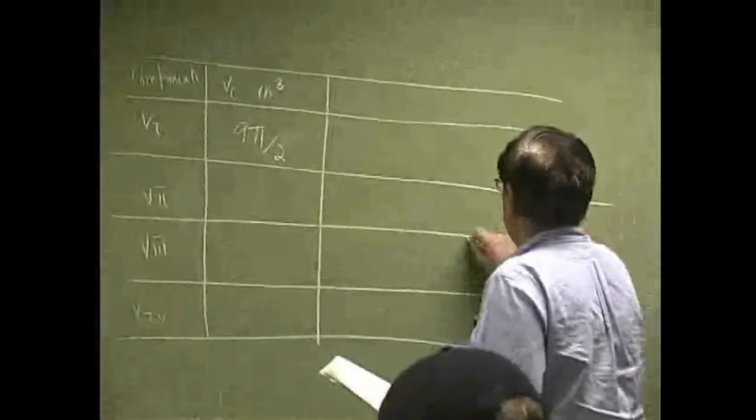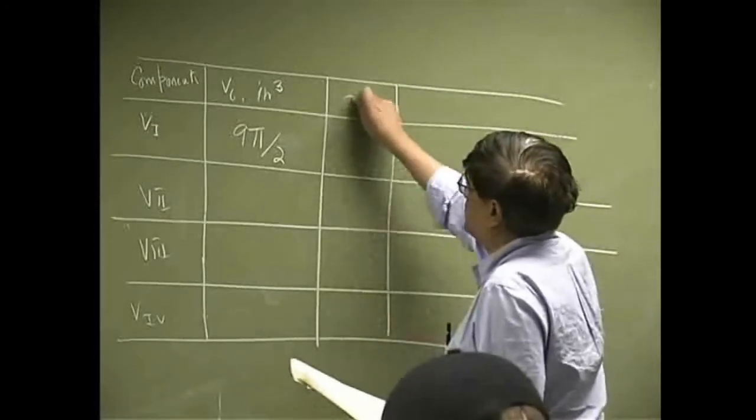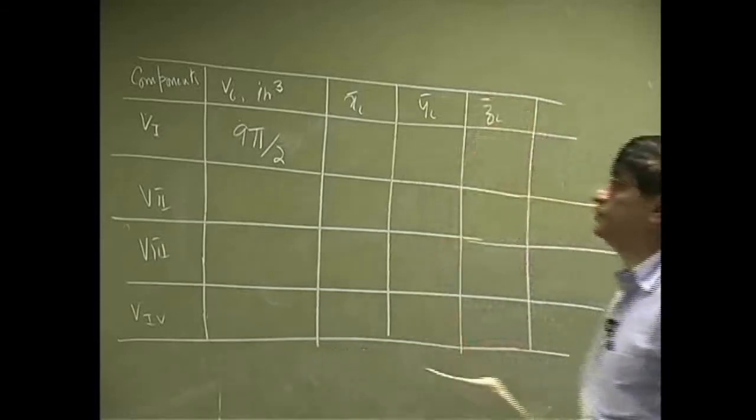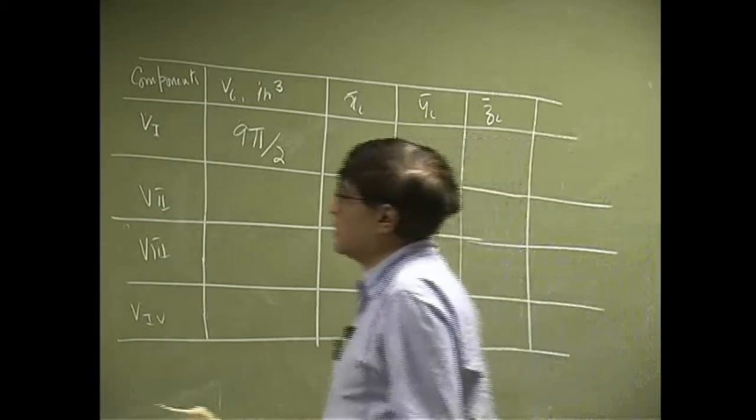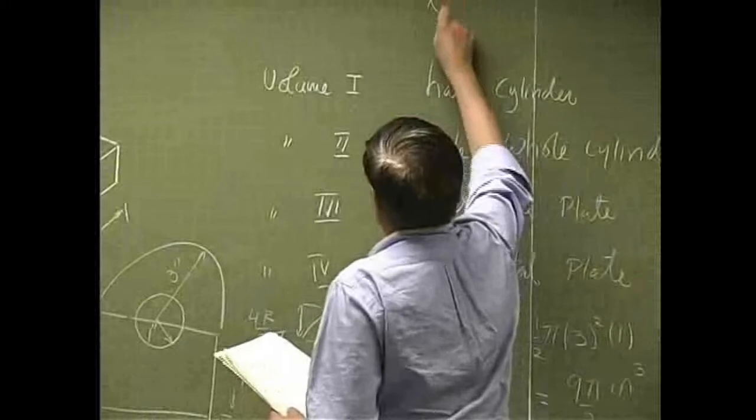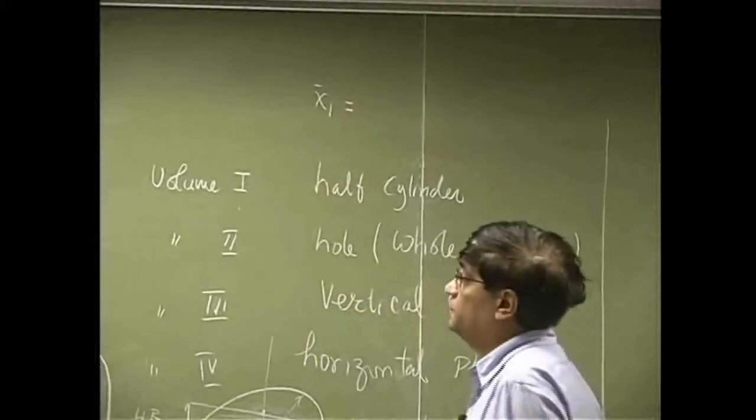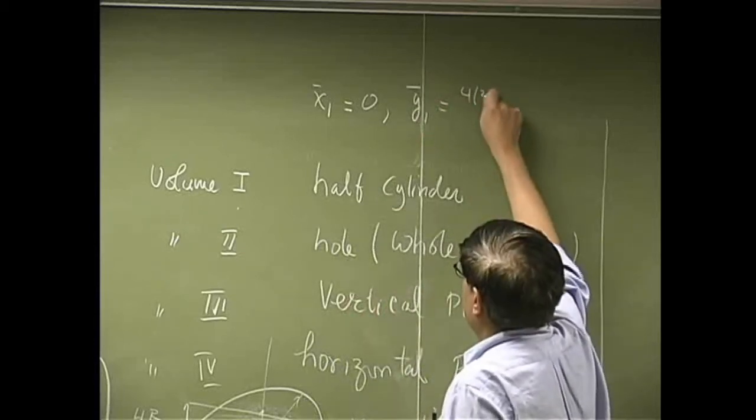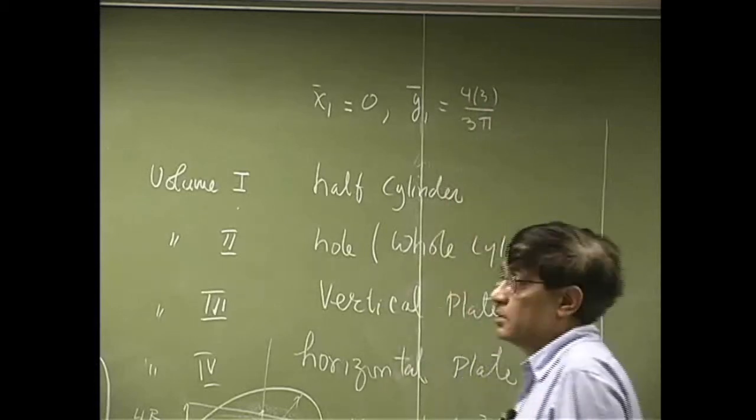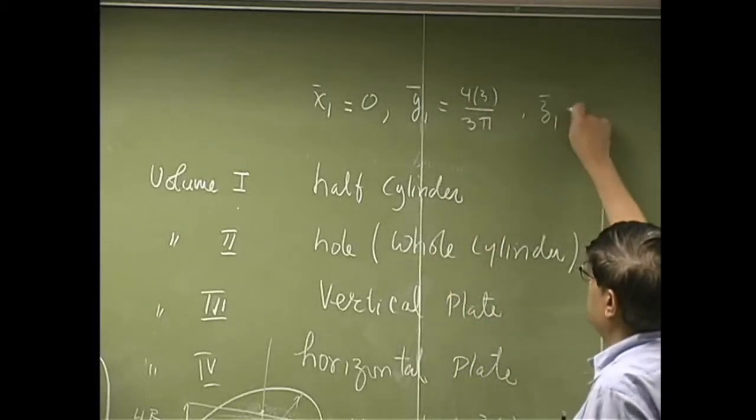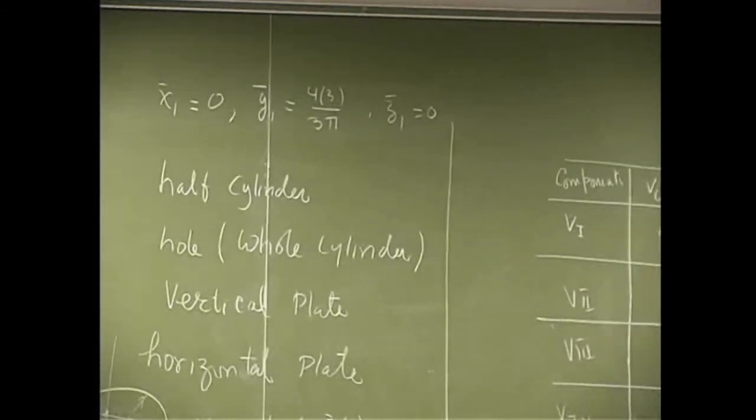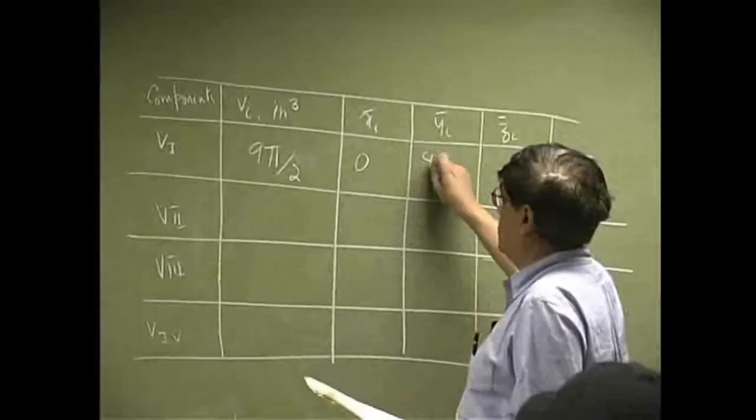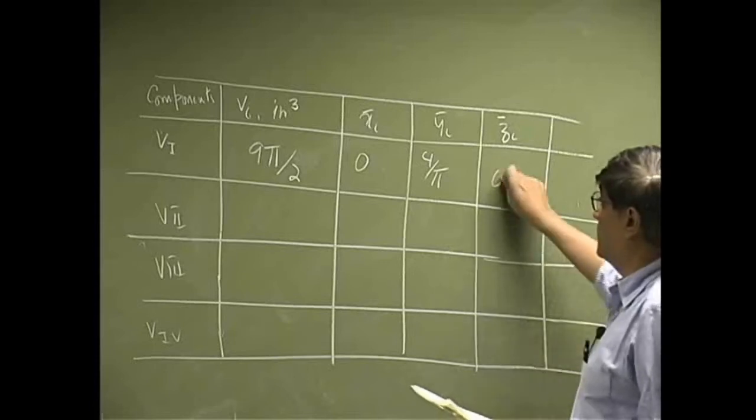So if I take three more columns here, I might take column X bar, take another column as Y bar, take another column as Z bar, which means the coordinates X₁ bar should be zero. Y₁ bar is 4 times radius, which is 3, over 3π. And Z coordinate for this one will be zero. So in here we get that 3 gets cancelled, you get 4 over π, and Z is zero.